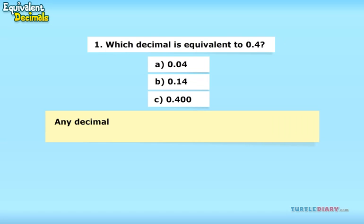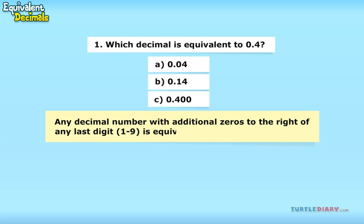Any decimal number with additional zeros to the right of any last digit, 1 through 9, is equivalent. So, the correct answer is 0.400. Options A and B do not have number 4 at the tenths place. These options are incorrect.